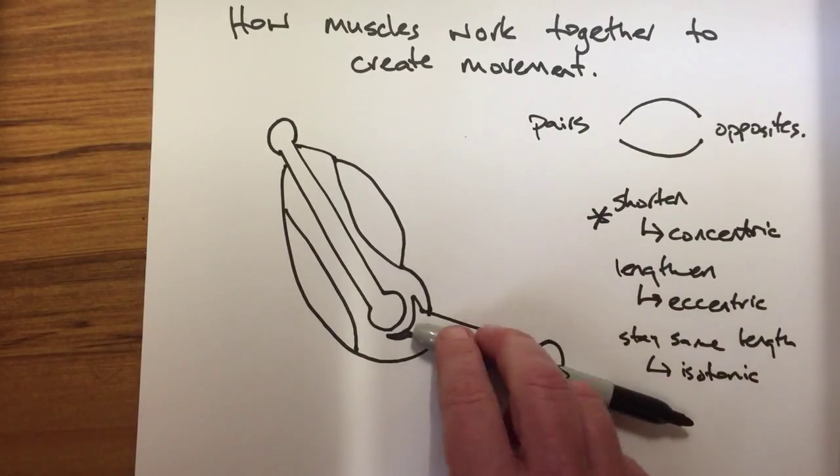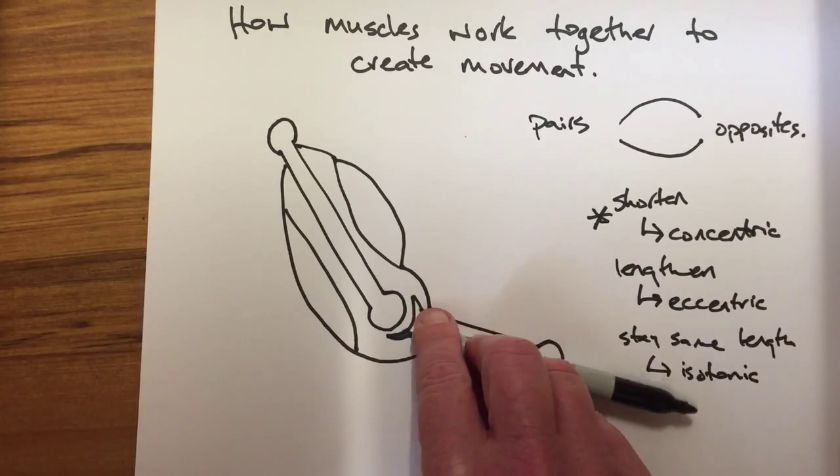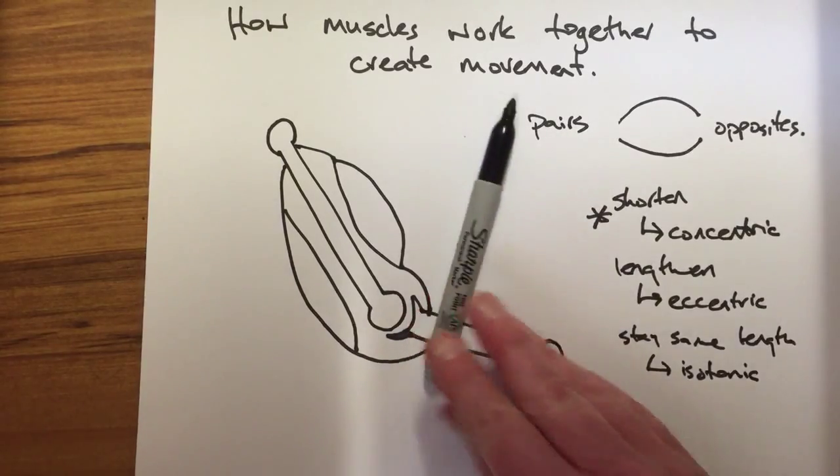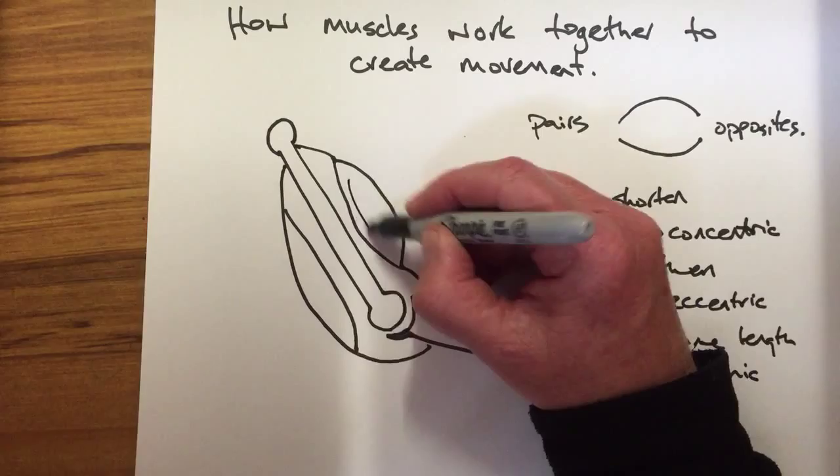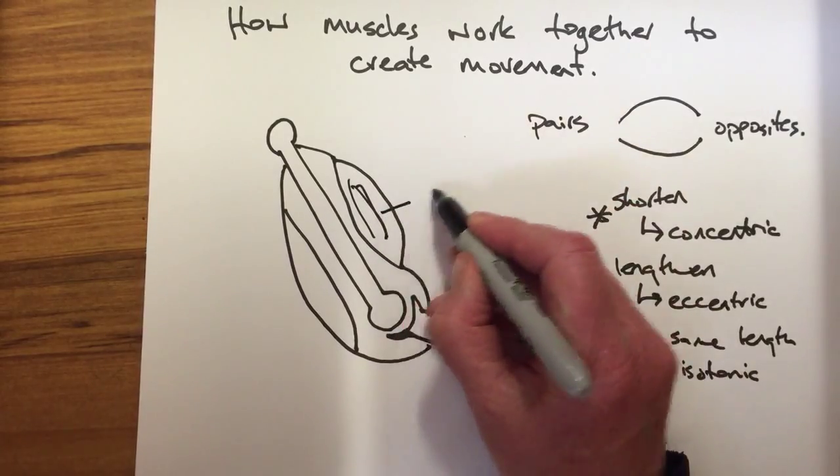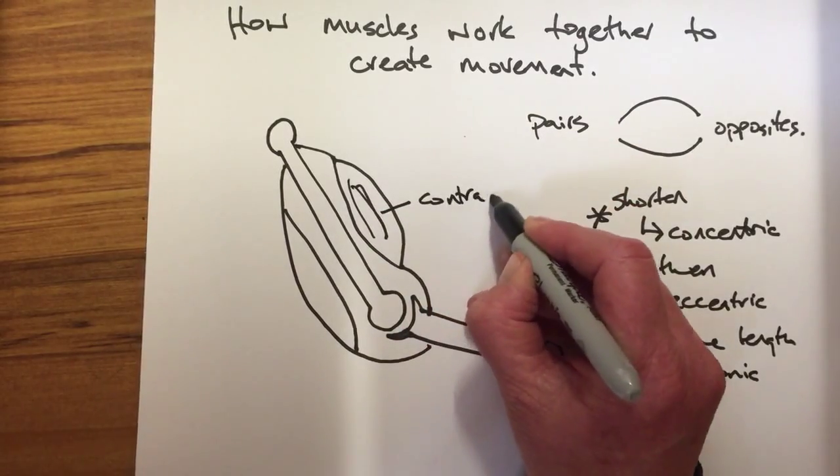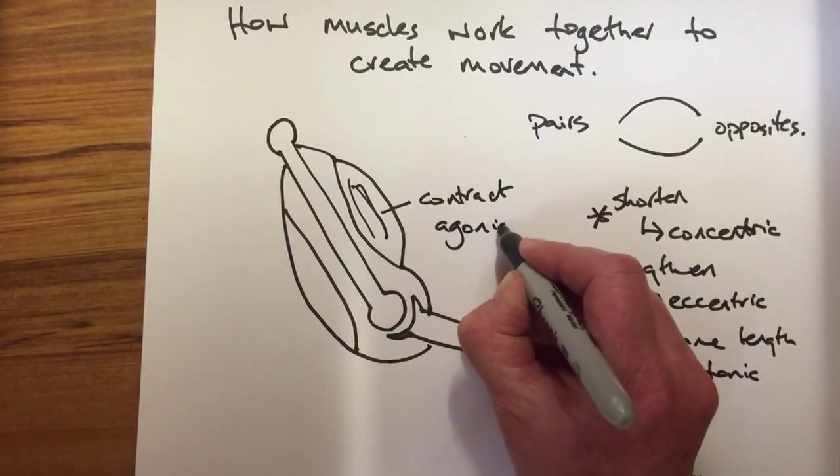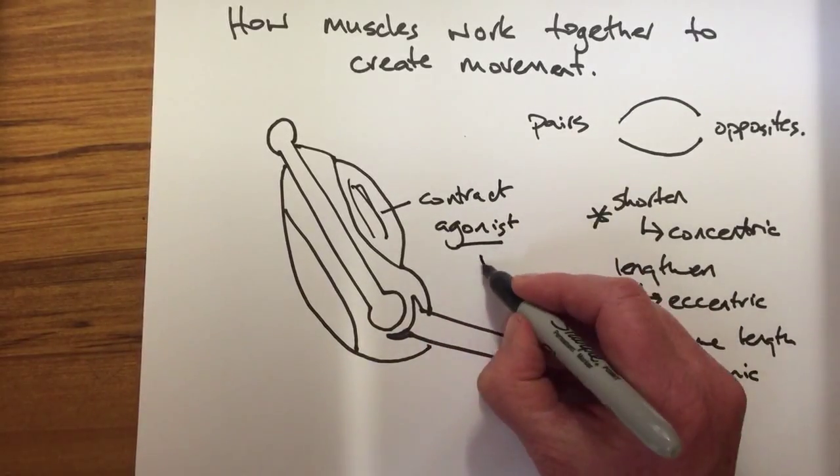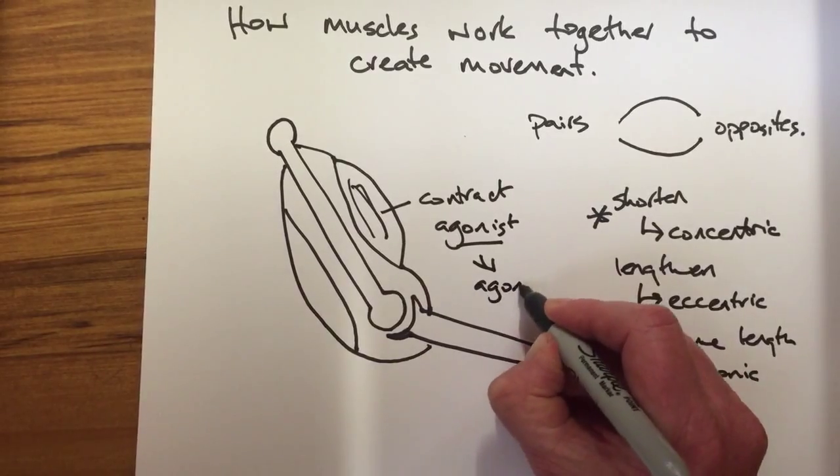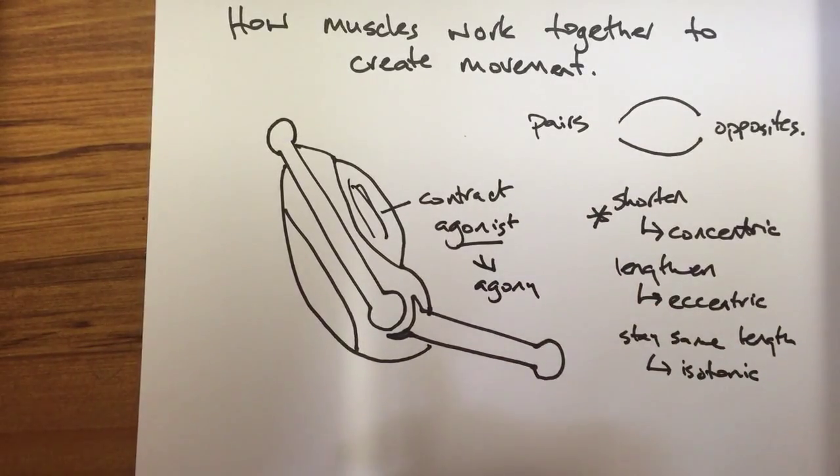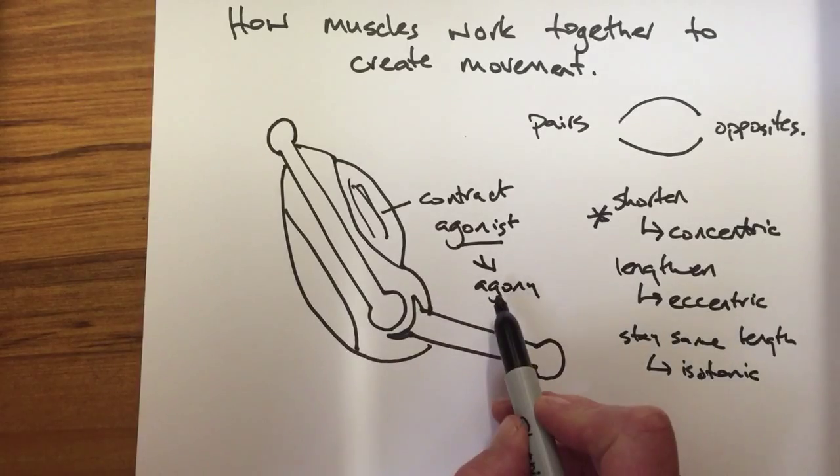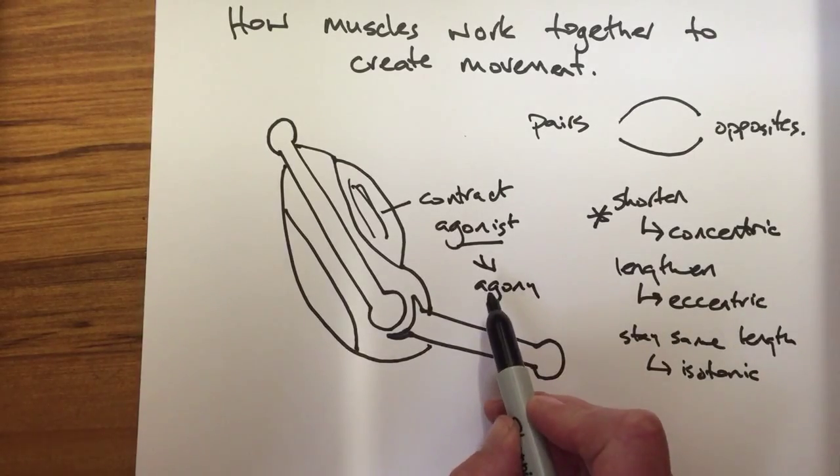To flex the lower arm, so to move it up, the bicep needs to contract. Now this is called the agonist muscle. The one that is in agony if it was to repeatedly do that action. It is the working muscle. It is the muscle that is contracting.